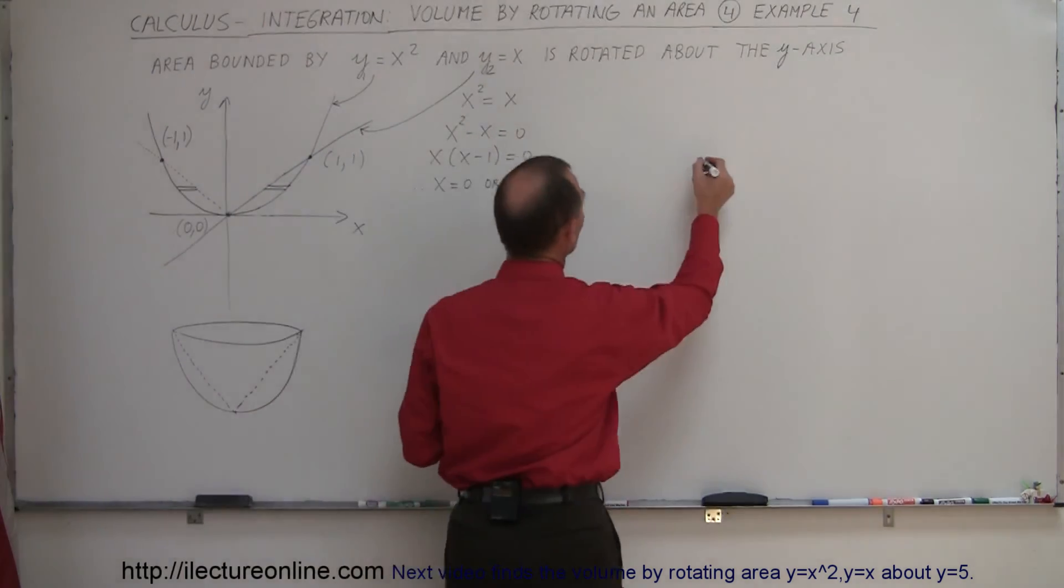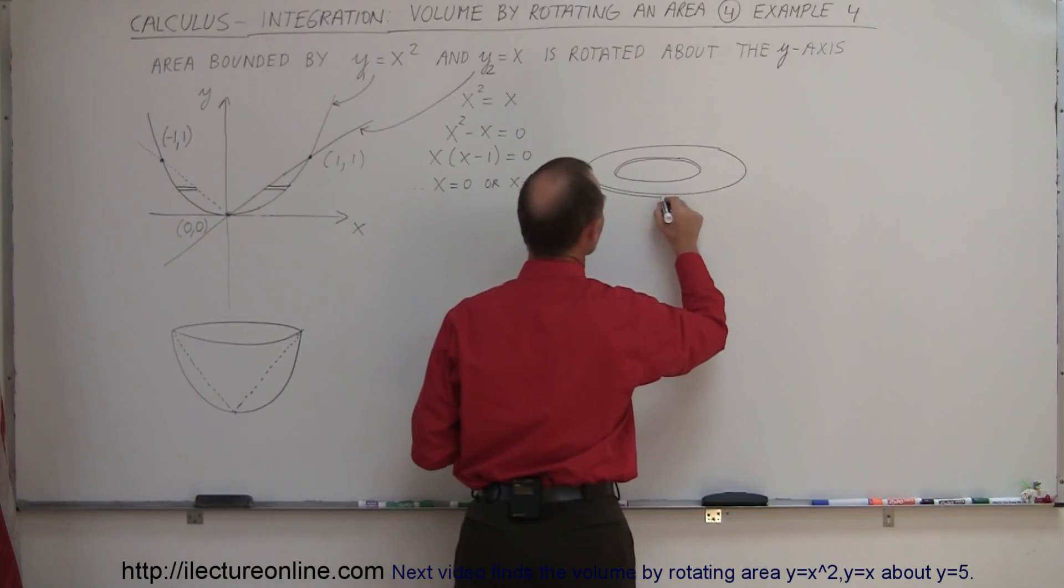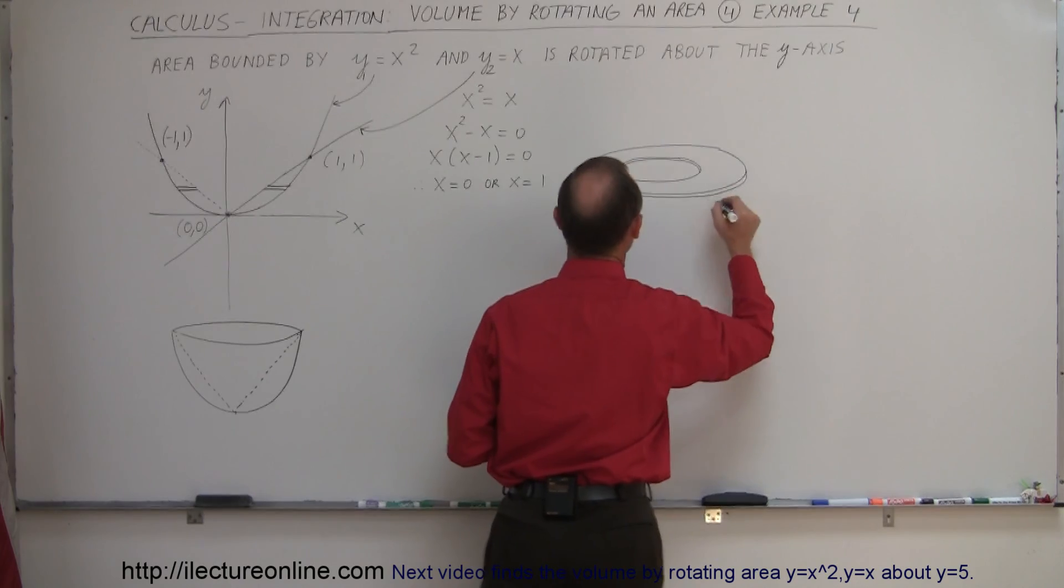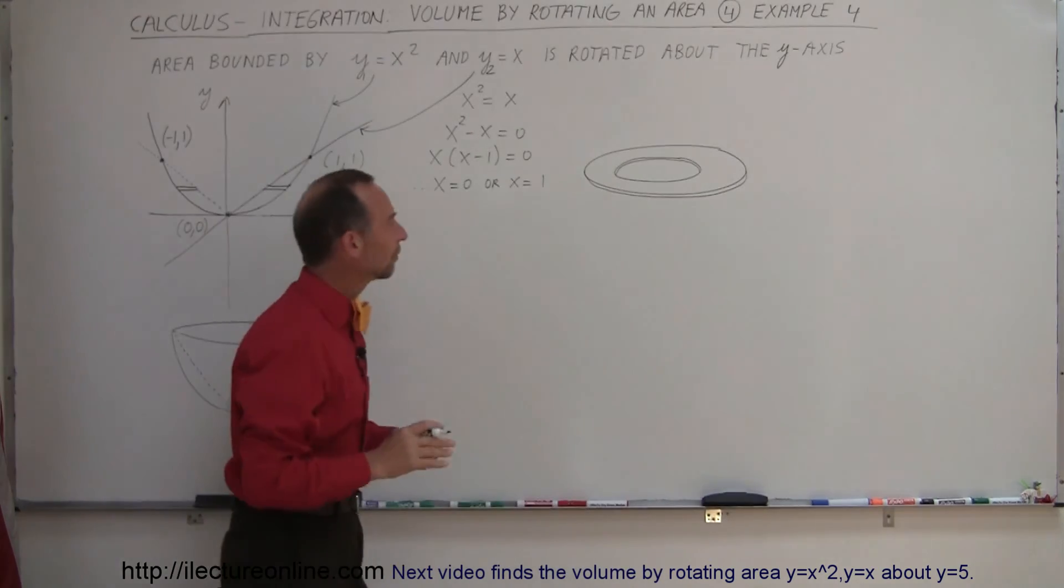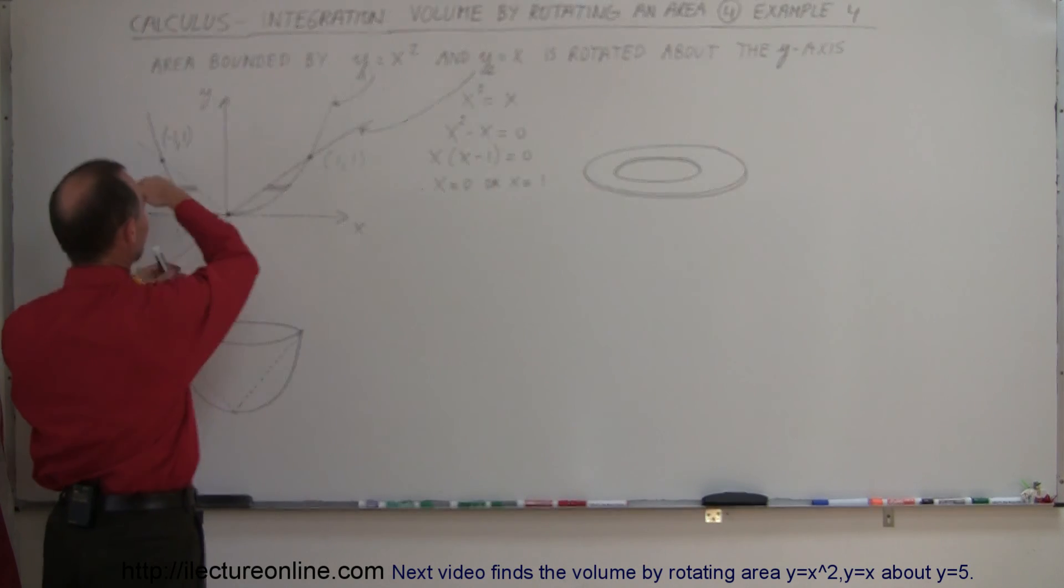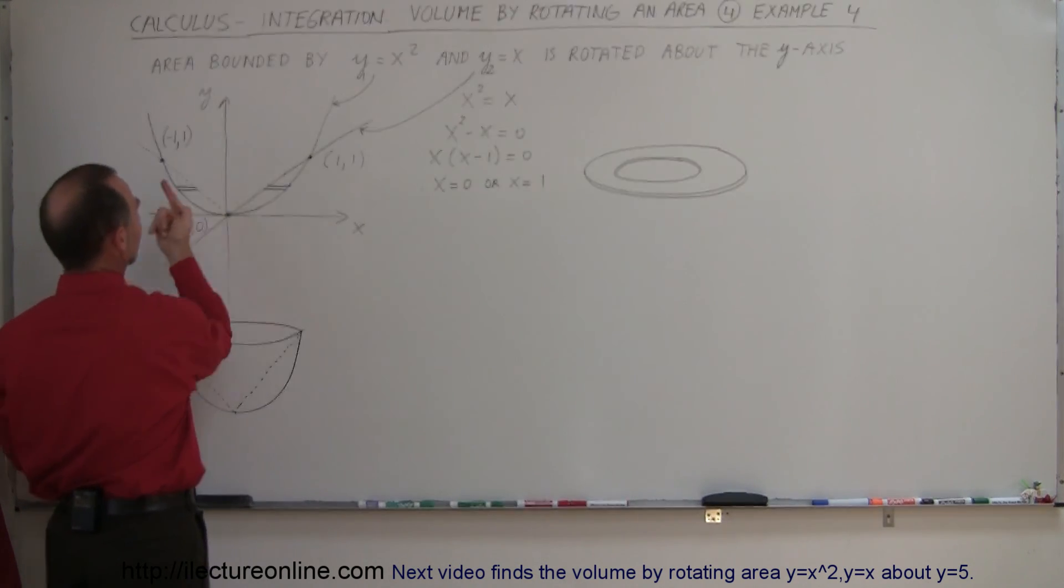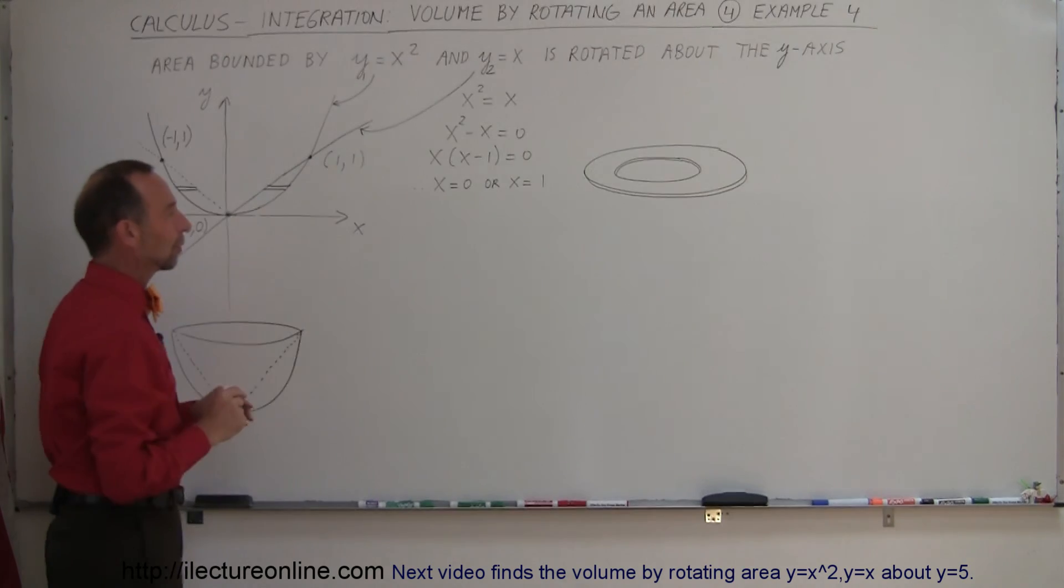Let me draw what that washer would look like. So here's our washer on the outside here like so. Didn't do too good of a job, but at least I think you see what it looks like. So that's the washer right here. If we slice it like this and we take it out, since it's a volume region like this, you can see that that's what it would look like.